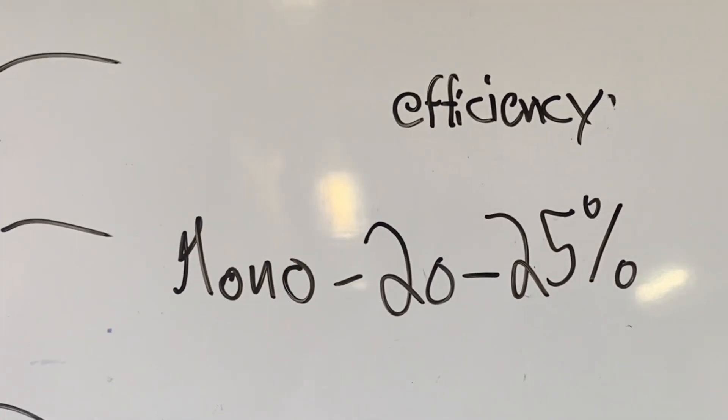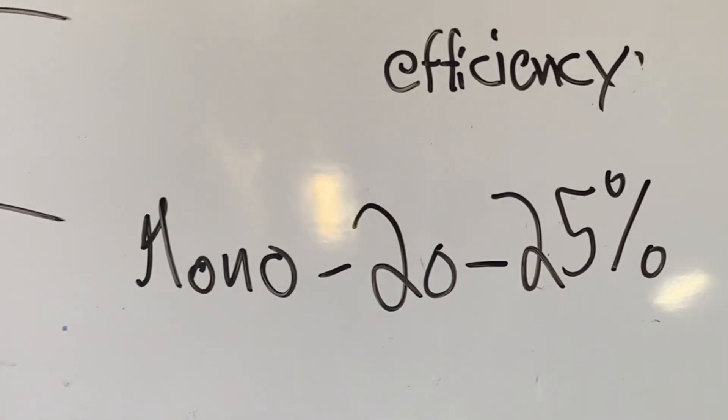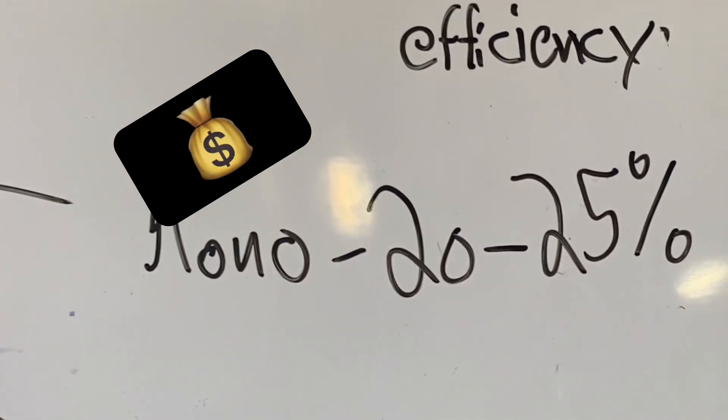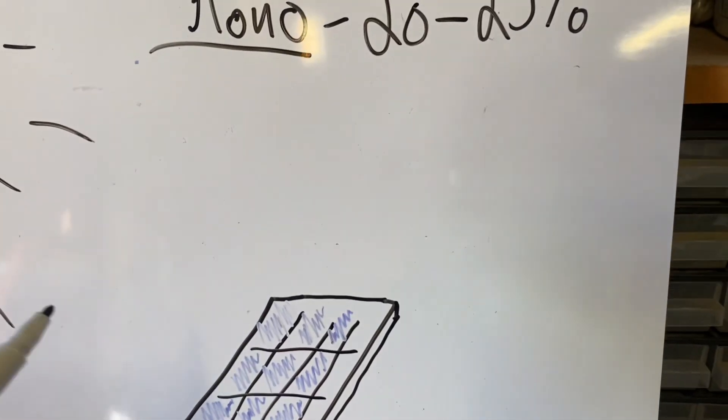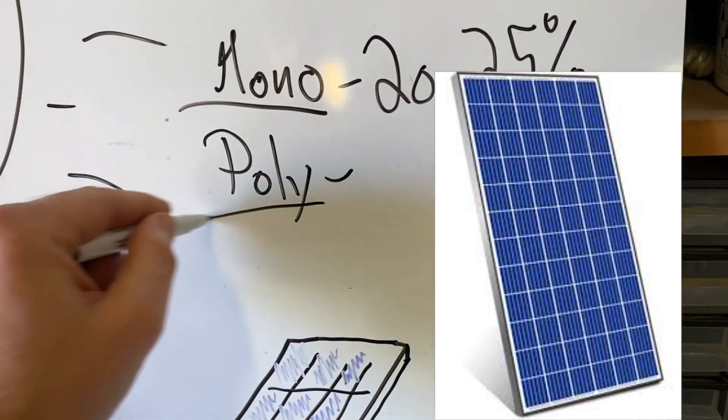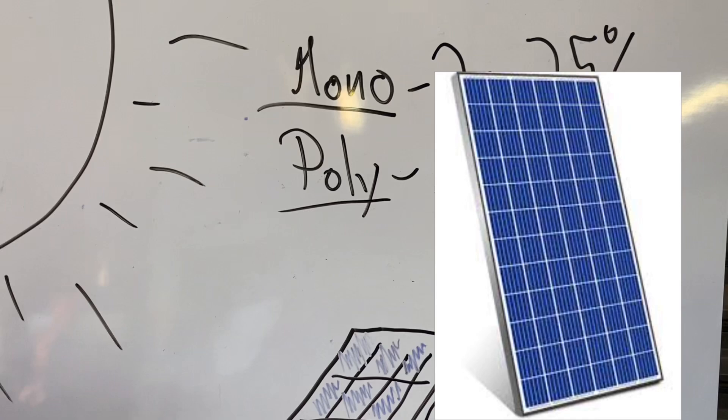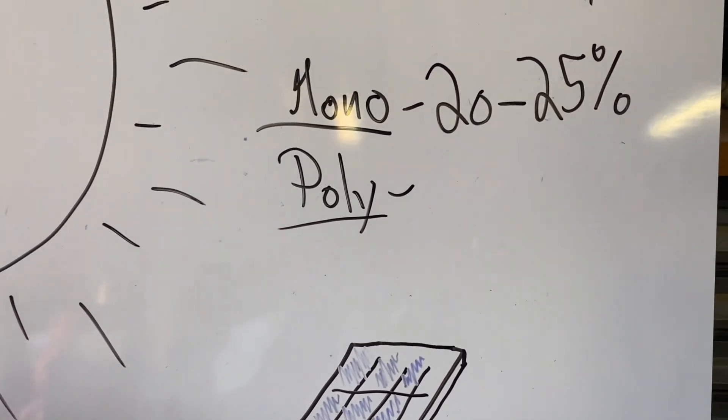Then you got your polycrystalline solar panels. They are like the budget-friendly cousin of your monocrystalline. They are made from multiple silicon crystals. They are cheaper but less efficient, usually about 15 to 20 percent efficiency.